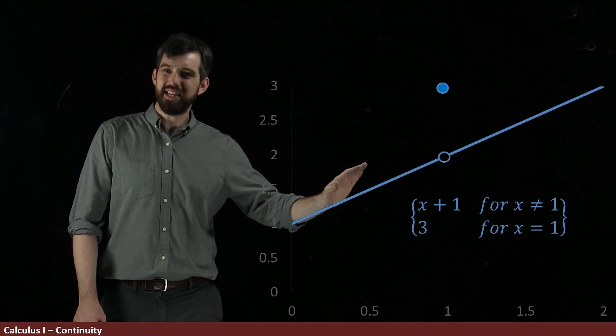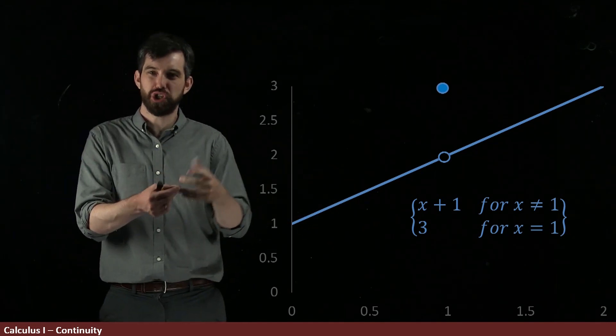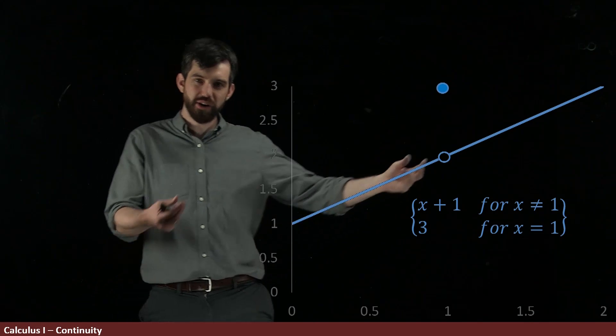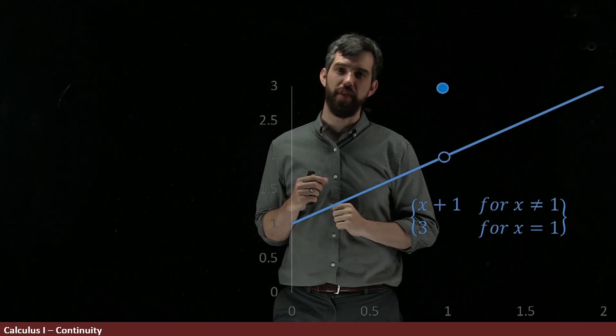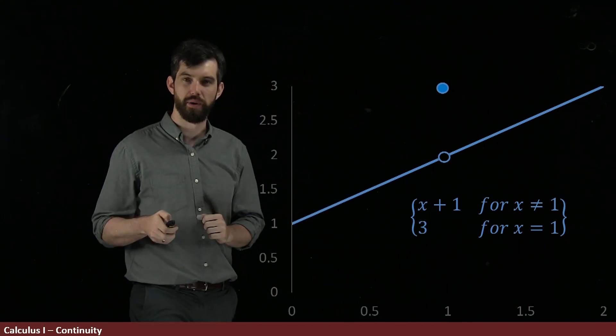So this is a different example from the sine, because for the sine the limit was just always the same thing as the function value, but here the limit is this one thing, the 2, but the function value is a different thing, it's the 3.